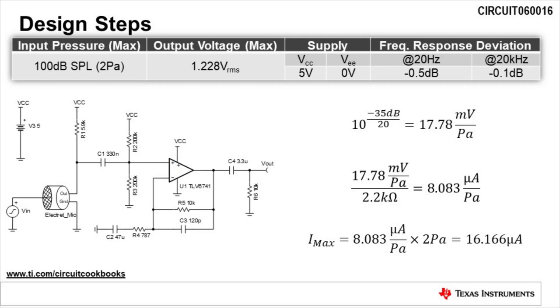Next is to convert volts per Pascal to current per Pascal. This is done by dividing volts per Pascal by the impedance of the microphone, which is 2.2 kilo ohms. Here we get 8.083 microamps per Pascal.